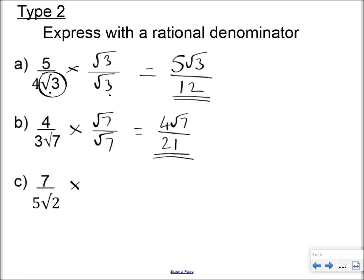And for this one, we multiply by root 2 over root 2, and that leaves me with 7 root 2 as my numerator, root 2 times root 2 is 2, 5 times 2 is 10, and that's my final answer, 7 root 2 over 10.